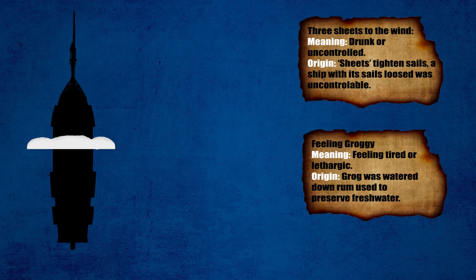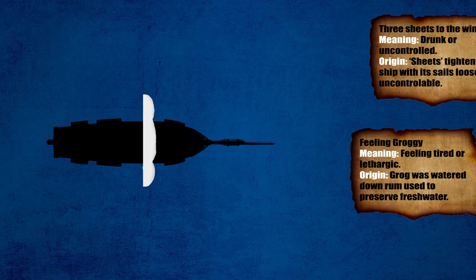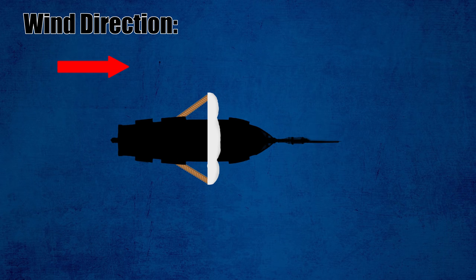To answer that, we have to go back to sailing ships during the Age of Sail. Unlike your bed, sheets aboard a ship were ropes connected to the corners of the sails.